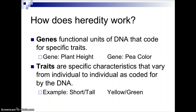So you could have a gene — if you're talking about pea plants, you could have a gene for plant height, a gene for pea color, a gene for flower position, and we'll look at all these. The traits are the characteristics that are going to vary from individual to individual as coded for by the DNA. So in the genes, you're going to code for whether a plant will be short or tall, or if you're looking at the gene for pea color, whether that pea will have a yellow or green coloration.